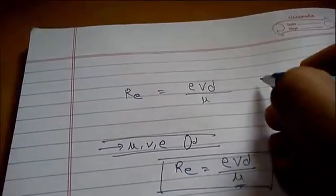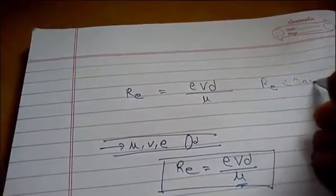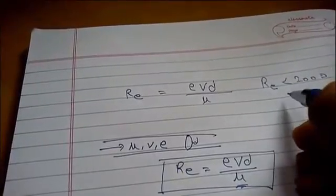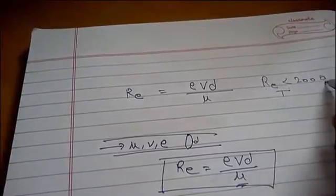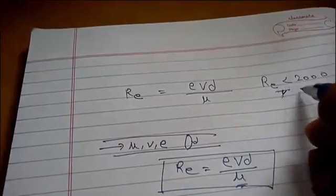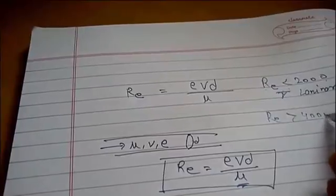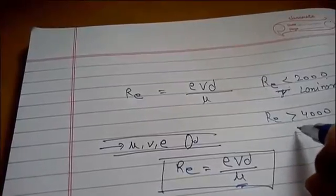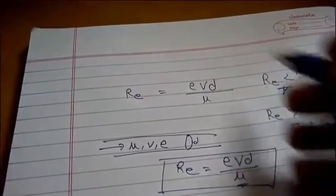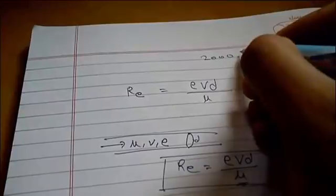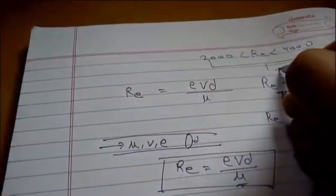If Reynolds number is less than 2000, then the flow will be laminar flow. If Reynolds number is greater than 4000, then the flow will be turbulent flow. And if Reynolds number is between 2000 to 4000, then the flow is transition flow.